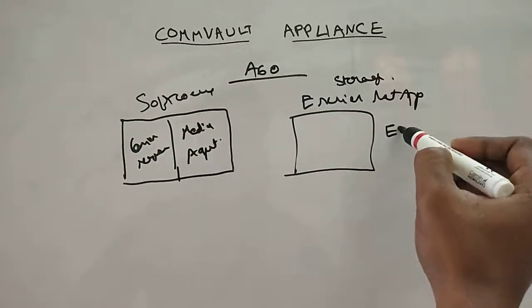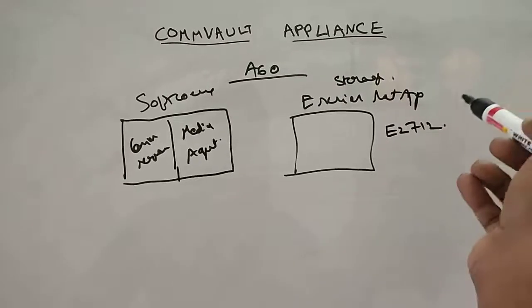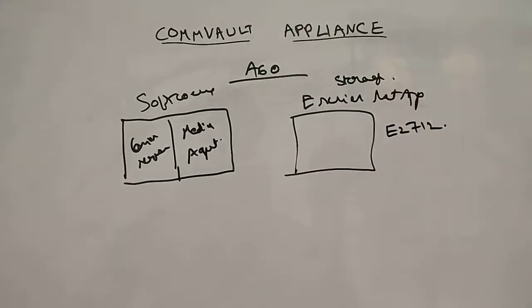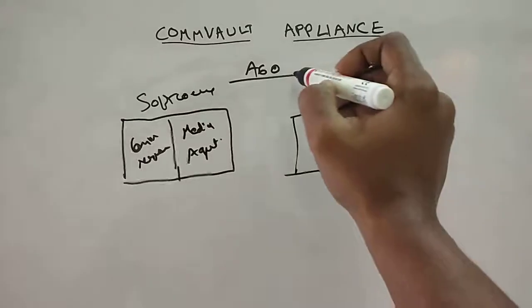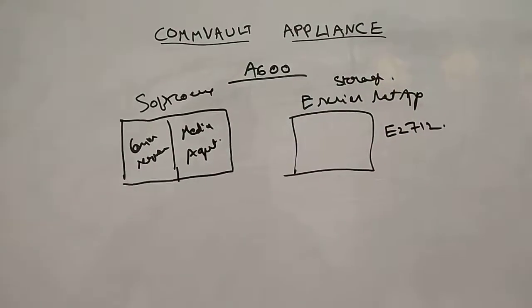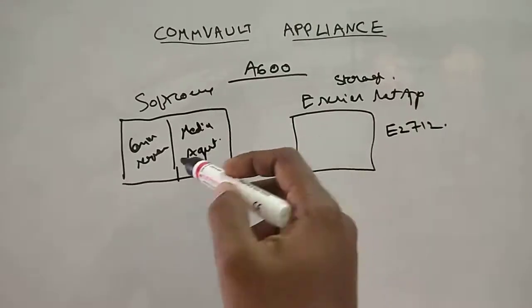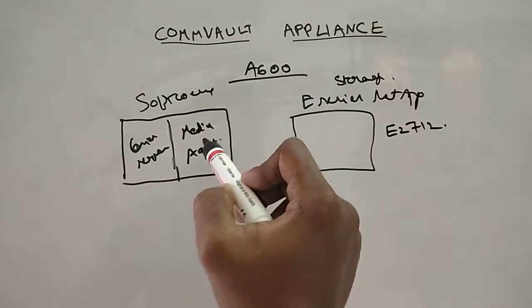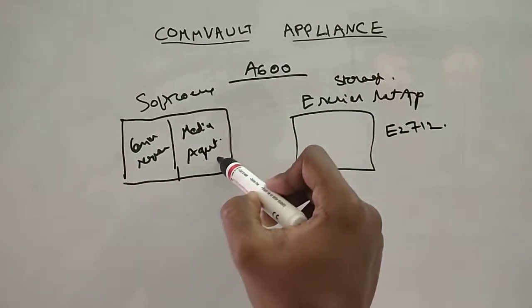When you're installing, if you already have a CommServe with you, you could just install this media agent on the hardware appliance and start using it as a secondary storage.